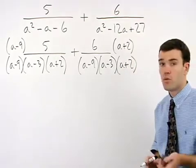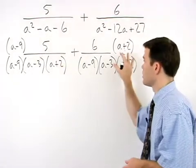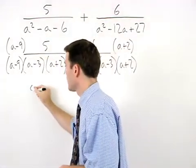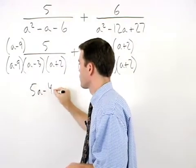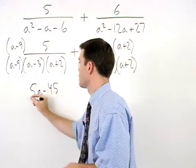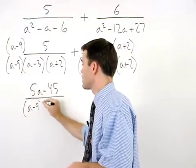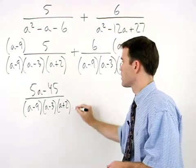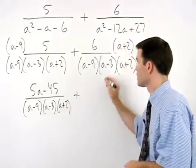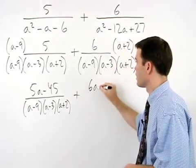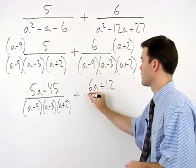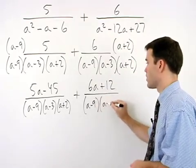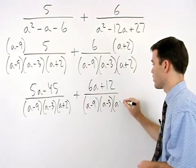And remember to distribute in the numerators, so we have 5a minus 45 over a minus 9 times a minus 3 times a plus 2 plus 6a plus 12 over a minus 9 times a minus 3 times a plus 2.